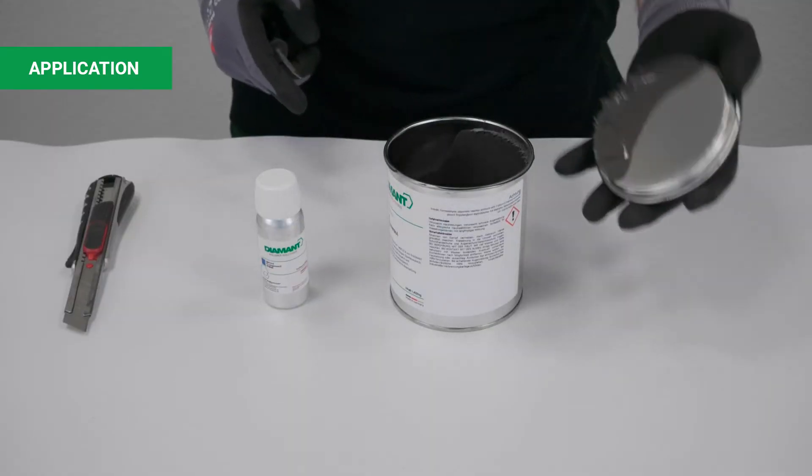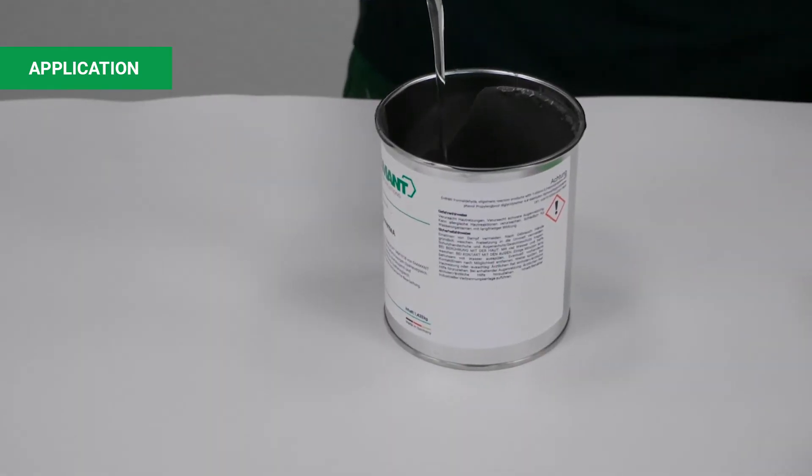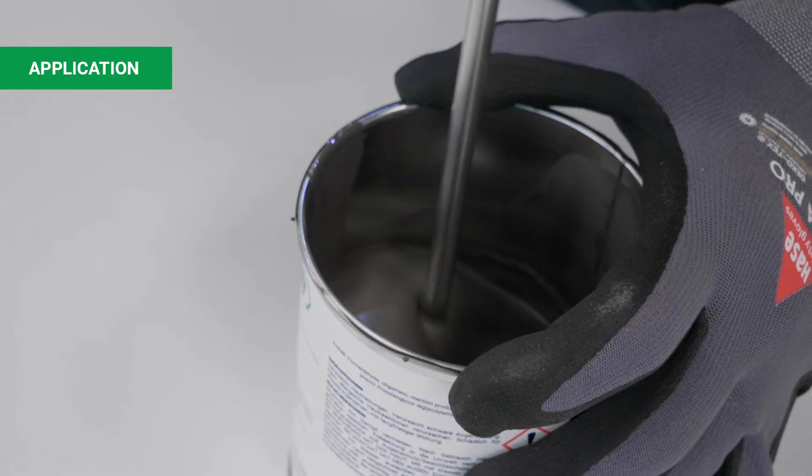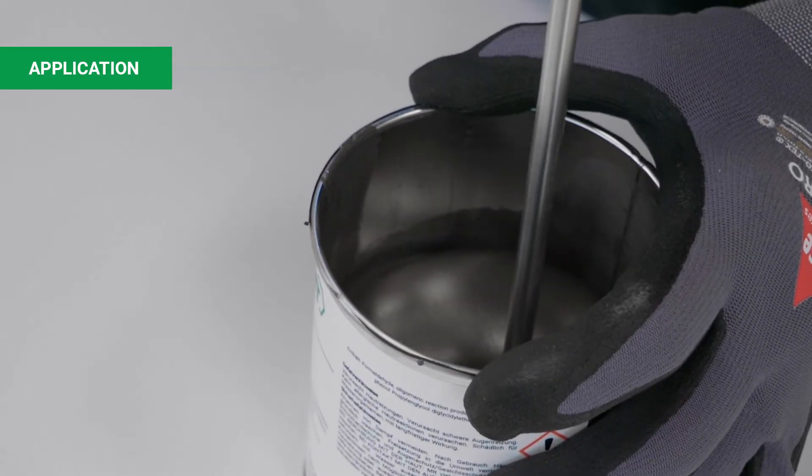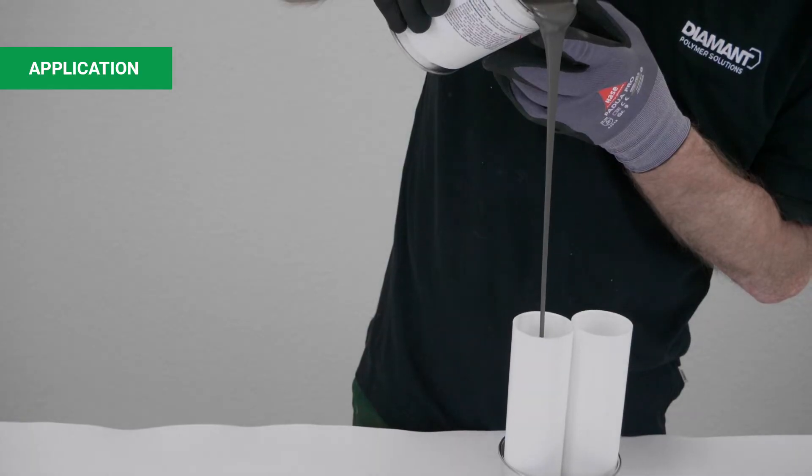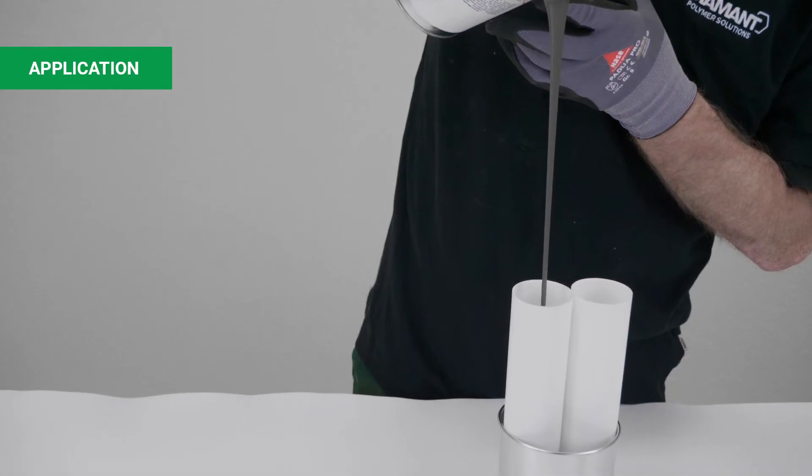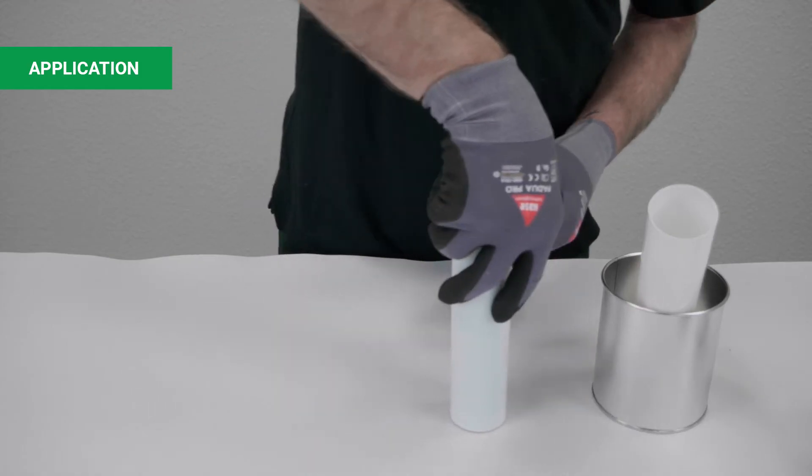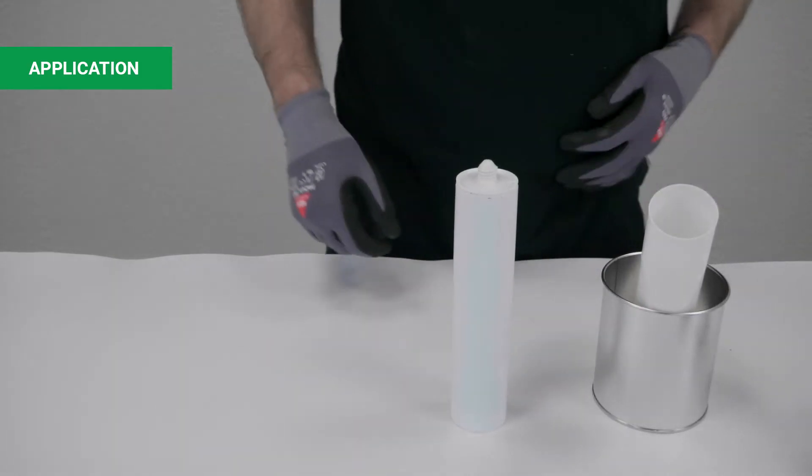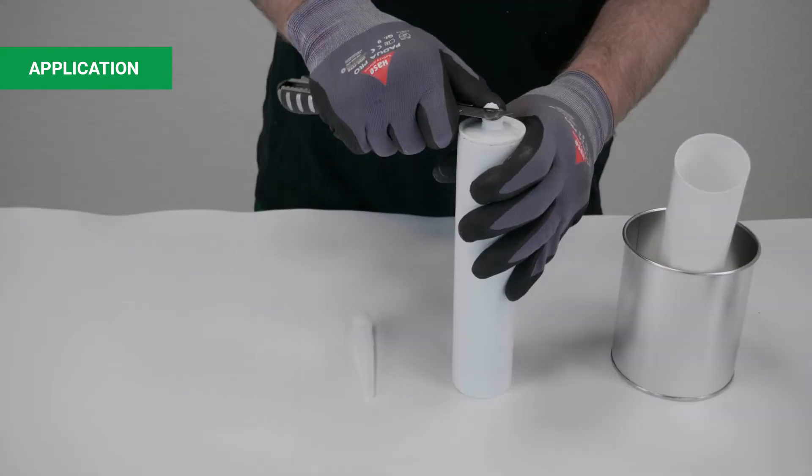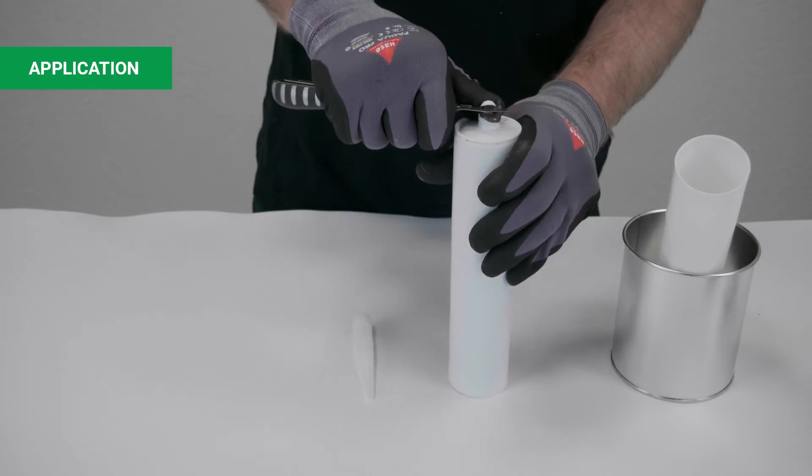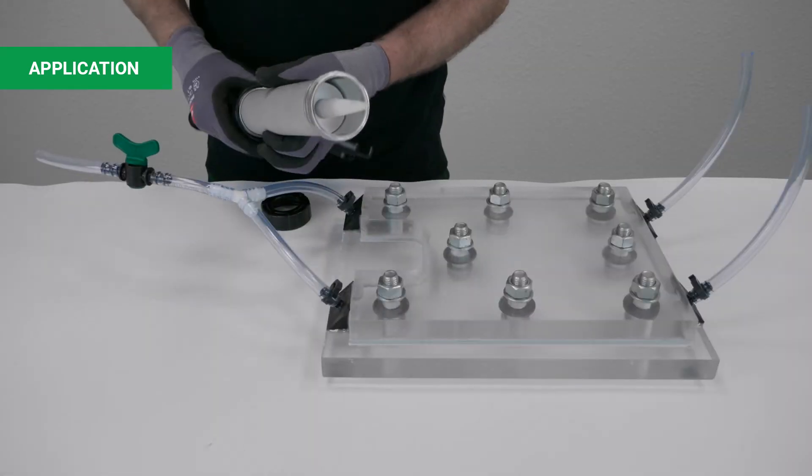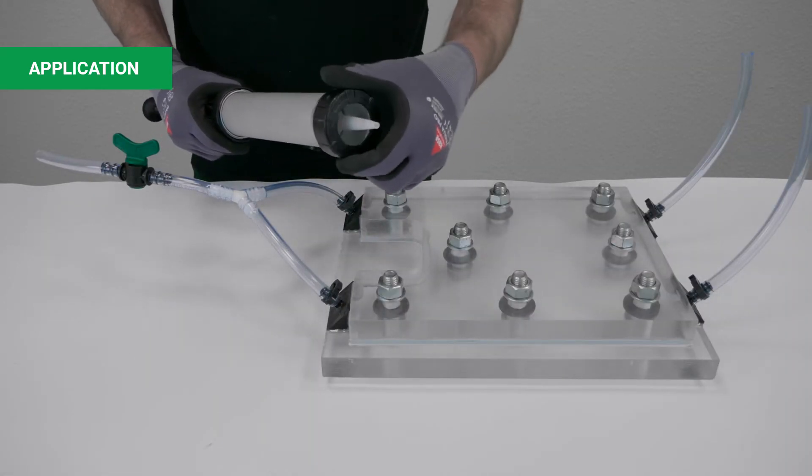For injection, the hardener is filled into the resin can and the material is intensively mixed with a mixing propeller. Then the material is filled into the empty cartridge and the plunger is inserted. In the process, the cartridge is rotated so that the air can rise to the top. Next, the cartridge tip is cut open, inserted into the cartridge gun and pushed into the hose for the injection process.